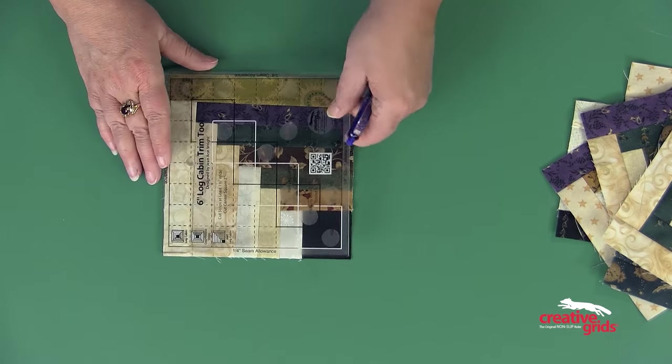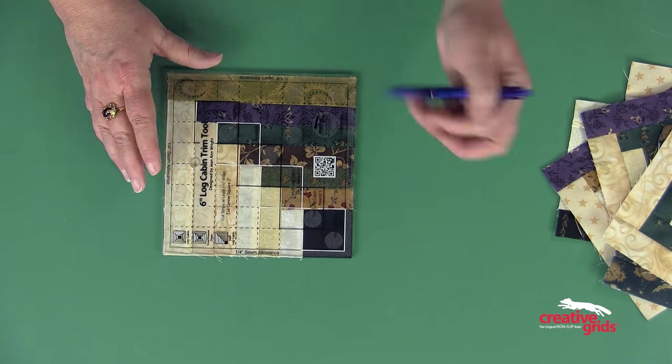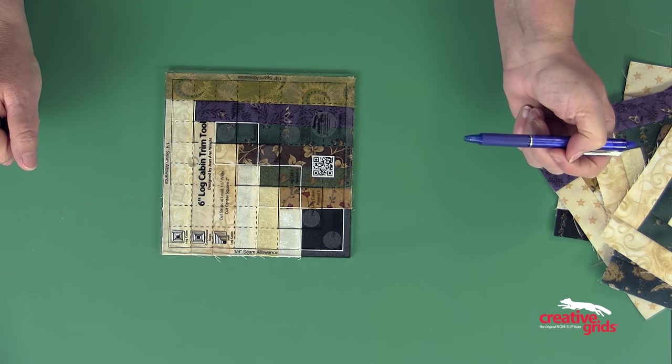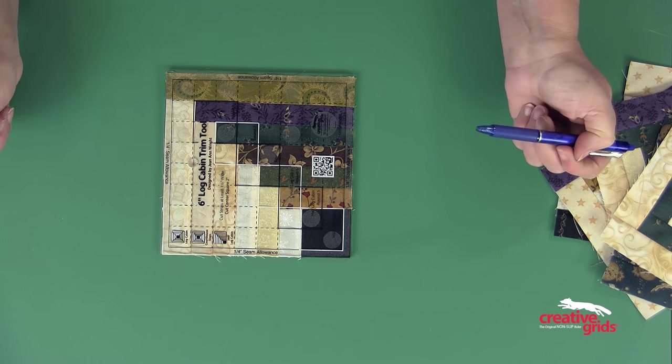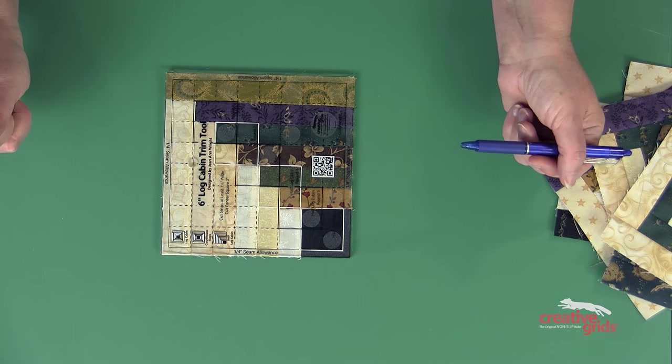For the final trim, the white square that's in the corner is marked for a half log cabin, so I'm going to place that there and trim the entire outside edge of the block. So those are all the types of blocks that you can make with the six-inch trim tool.